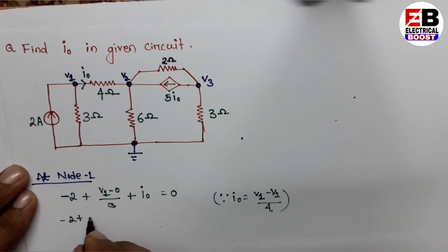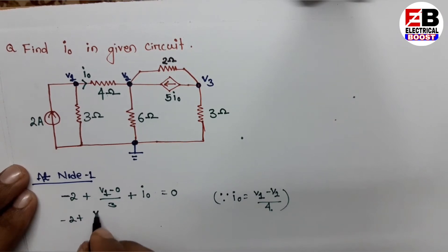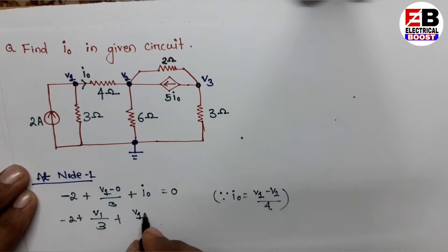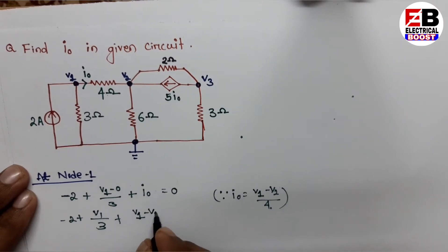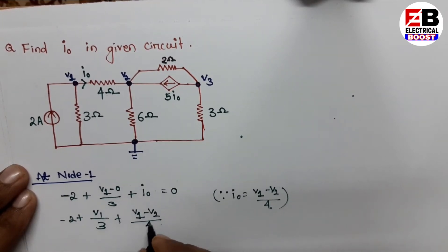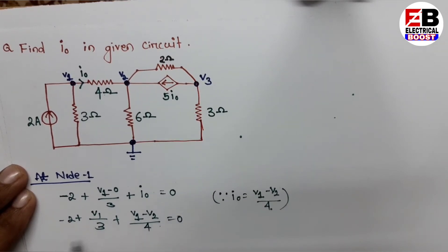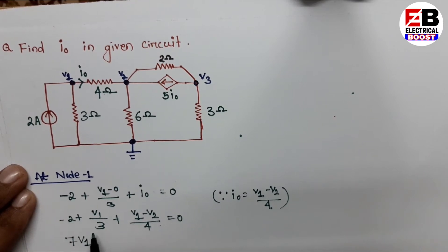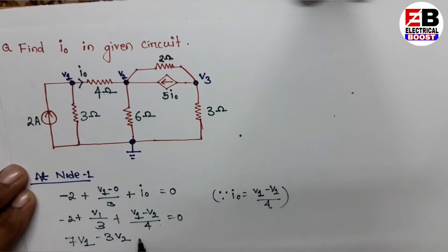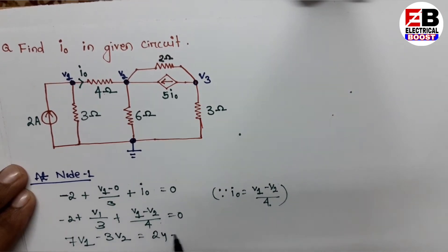Substituting I-naught value into the node 1 equation: minus 2 plus V1 divided by 3 plus (V1 minus V2) divided by 4 equals 0. After solving this equation, we get 7V1 minus 3V2 equals 24. This is our first equation.